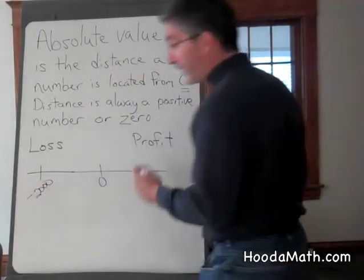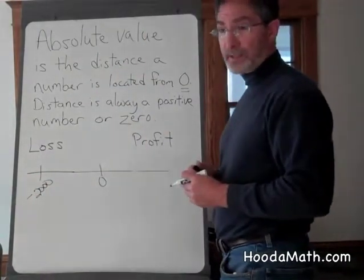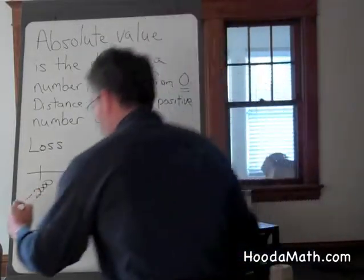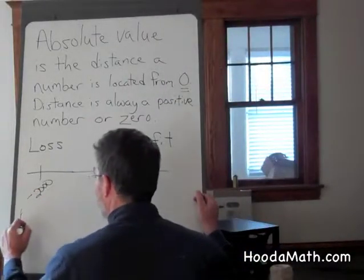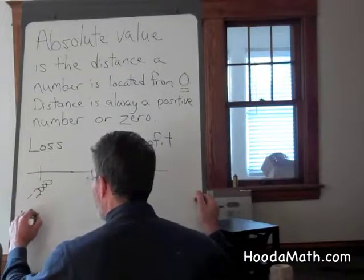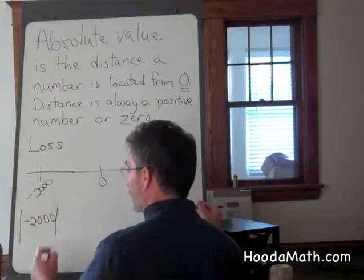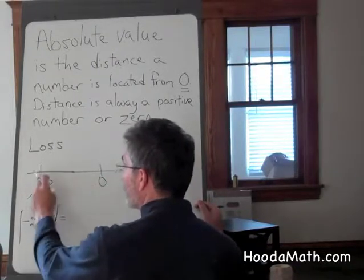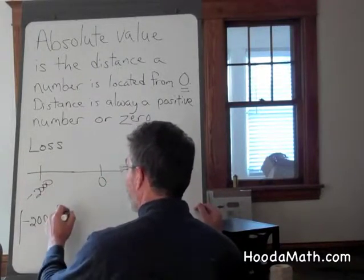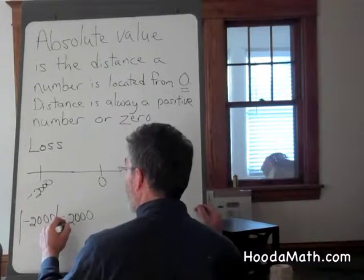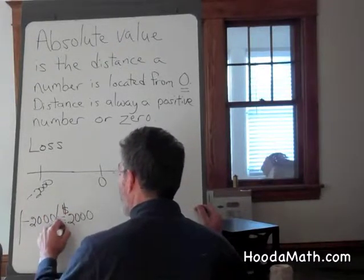It can be represented on the number line like this. But if I wanted to know the absolute value, which is represented with the symbol, two vertical lines, of negative $2,000, that would be the distance from zero. And the distance would be $2,000. So I would have a $2,000 debt.